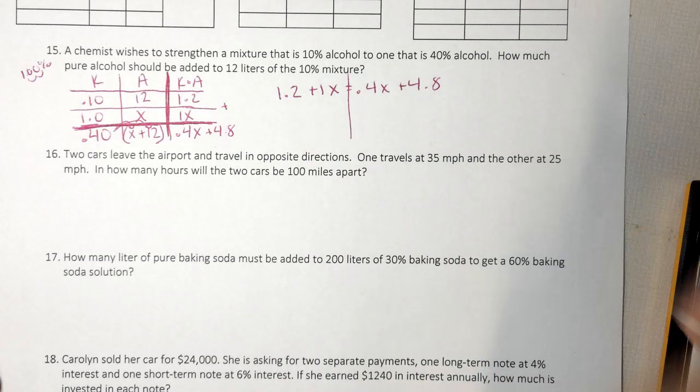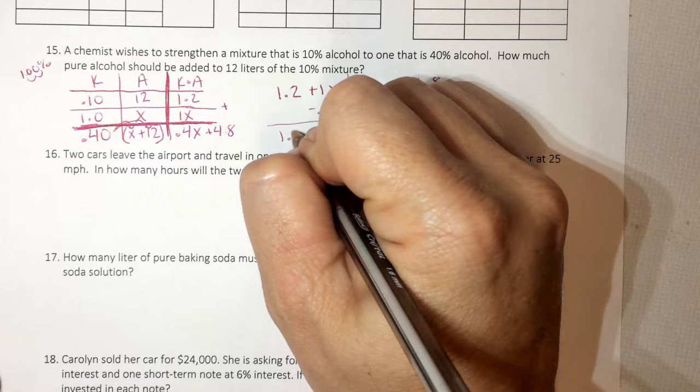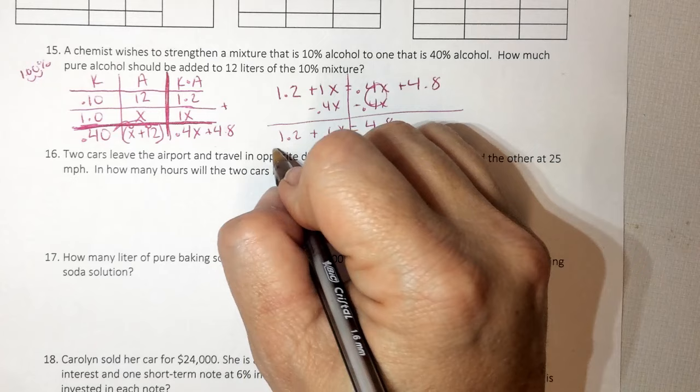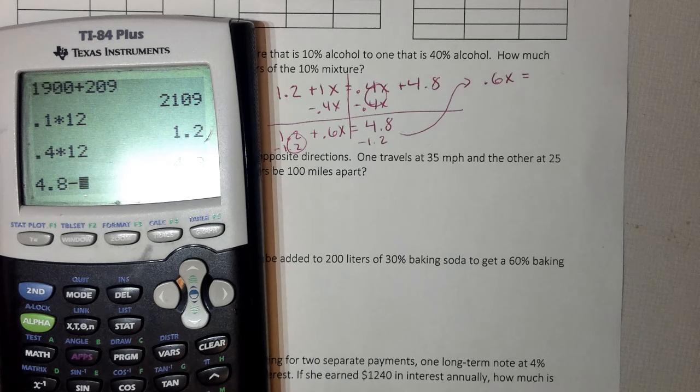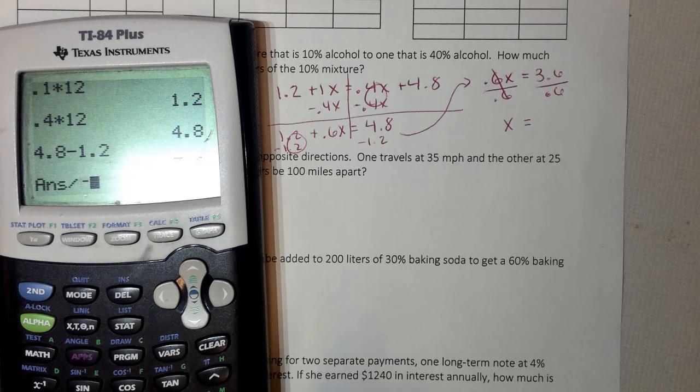I always like to move my smallest x first to solve, so I'm going to do minus 0.4x on both sides. Bring down my 1.2. That brings me positive 0.6x equals 4.8. And now that all my x's are on the left, I need to get rid of the 1.2, so minus 1.2, minus 1.2. And I have 0.6x equals 3.6. Divide both sides by 0.6. And I get x equals 6.